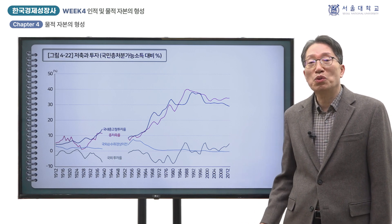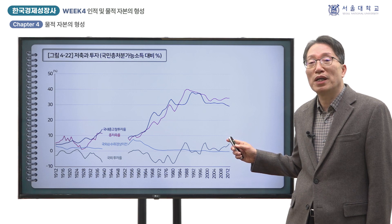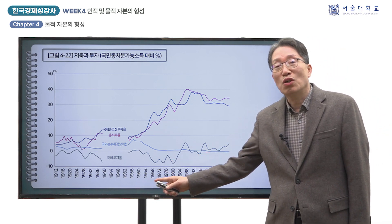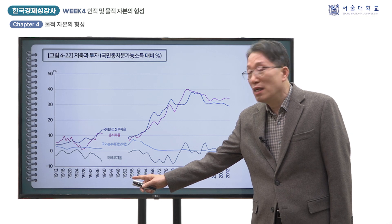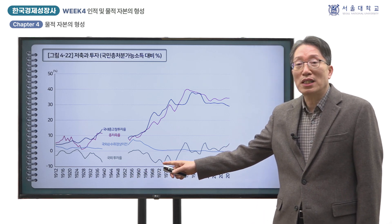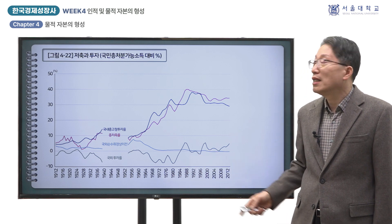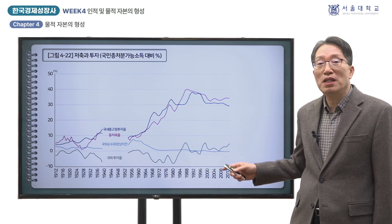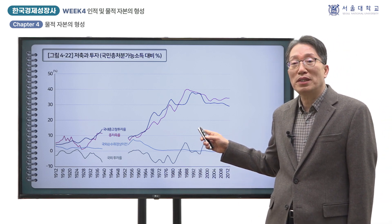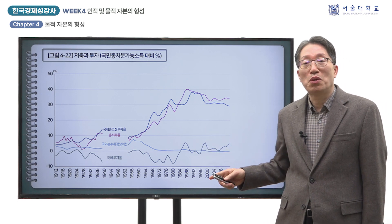국내총고정투자율의 추이를 보면, 해방 전에는 10%에 미치지 못하다가 1930년대 후반에 이를 넘기 시작했습니다. 해방 후에는 다시 10% 아래로 떨어졌지만 그 후 빠르게 상승하여 1991년에는 38%로 정점에 달한 후 하락하는 역U자형을 보이고 있습니다.